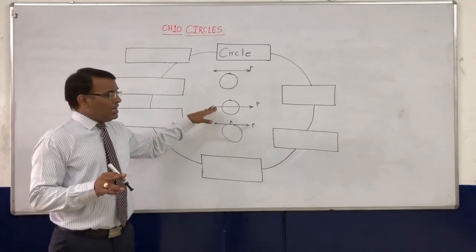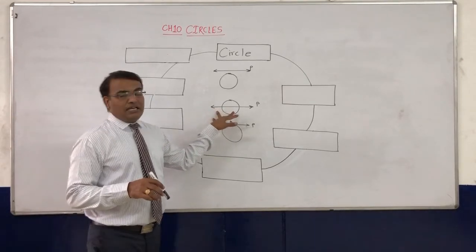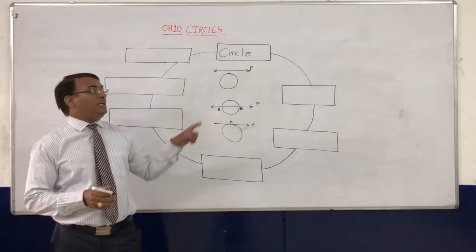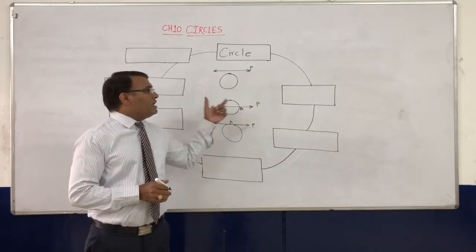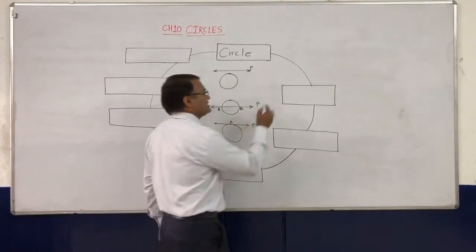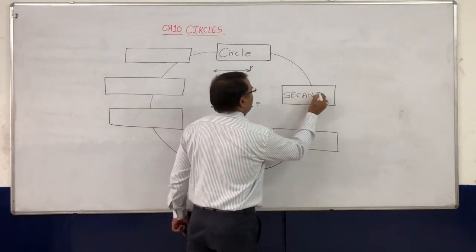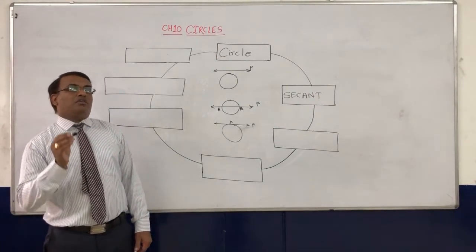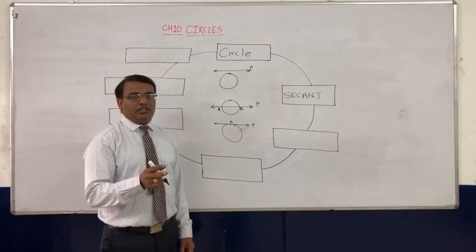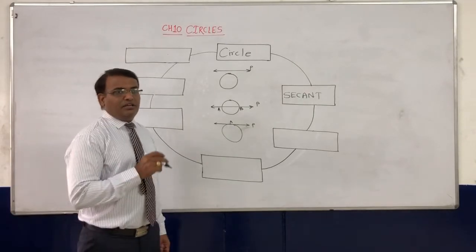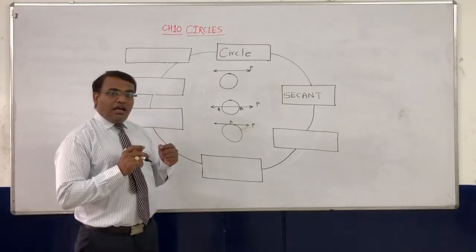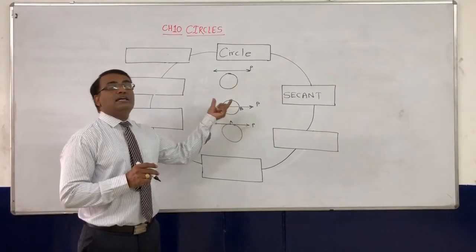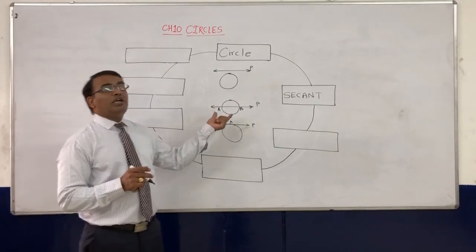If you see the second diagram, the line P is intersecting the circle and meeting it at two different points, A and B. So that line P is known as a secant. A secant is a line which intersects — or cuts or meets — the circle at two different points. So every line segment which intersects the circle at two different points is known as a secant.